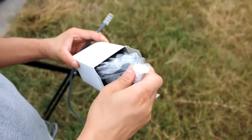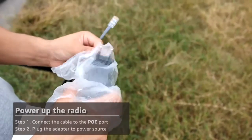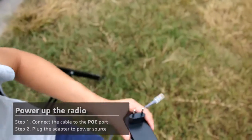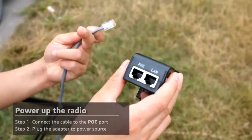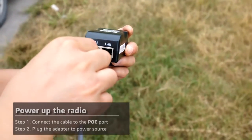Finally, we need to power up the device. The radio is powered with a 24 volt DC power. There are two ports on the PoE adapter. You need to connect the cable from the radio to the PoE port, otherwise the radio won't work.